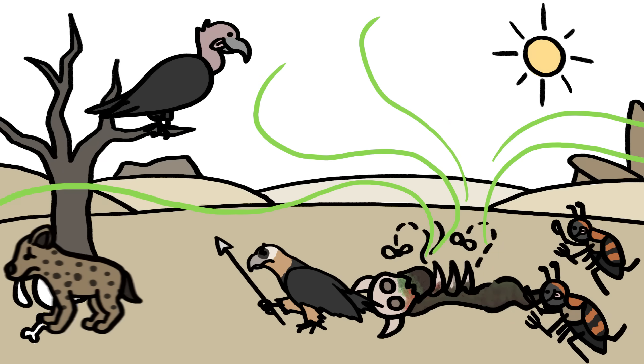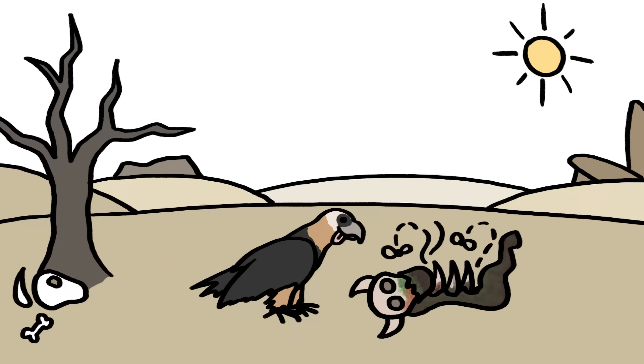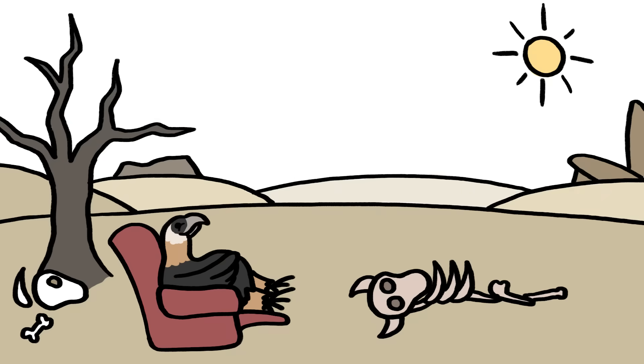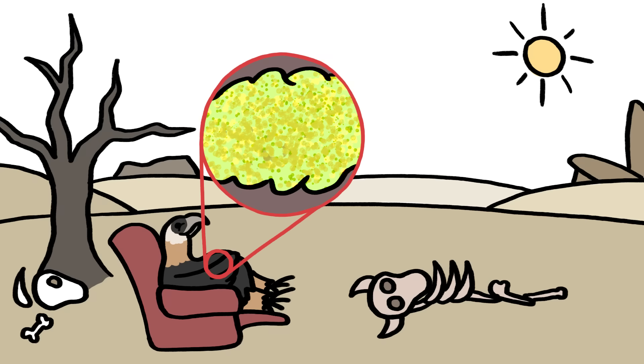To combat the microorganisms in these meals, the beetles smear carcasses with antimicrobial slime before feeding. Bearded vultures prefer an after-dinner antibiotic, assaulting microbes with stomach acid that's ten times more acidic than ours, and strong enough to corrode steel.